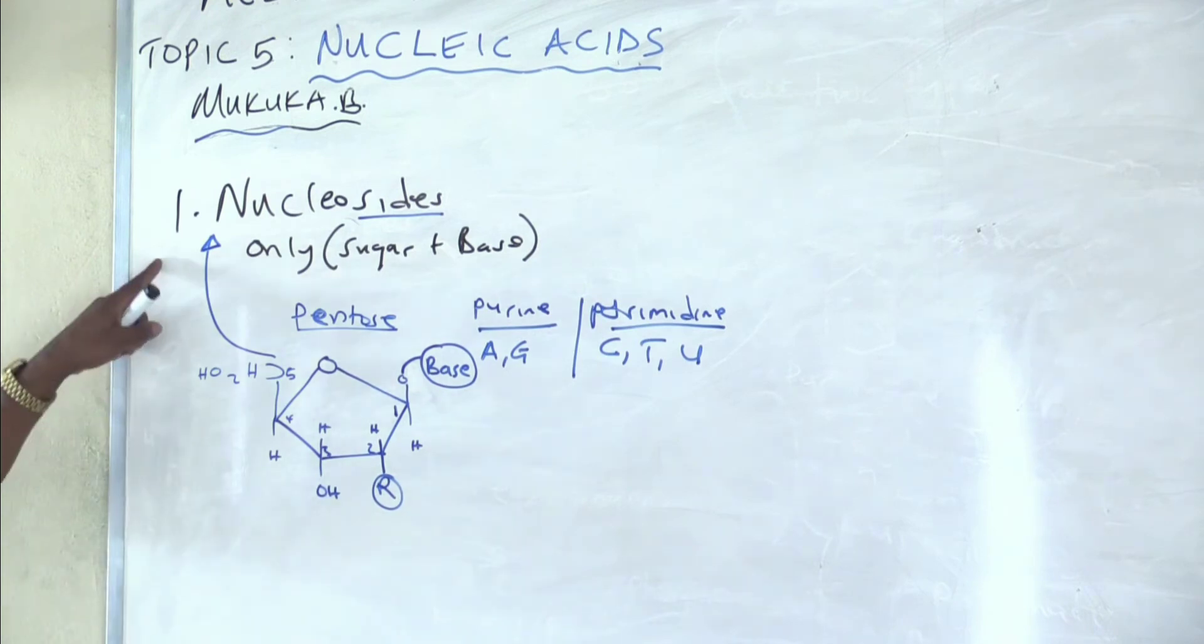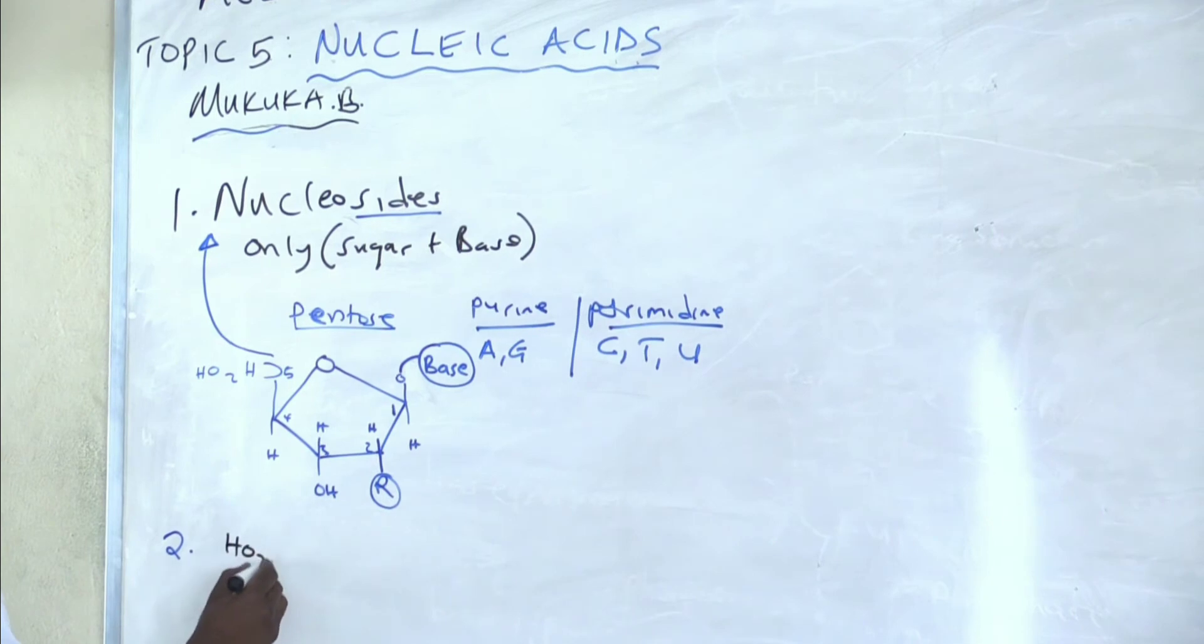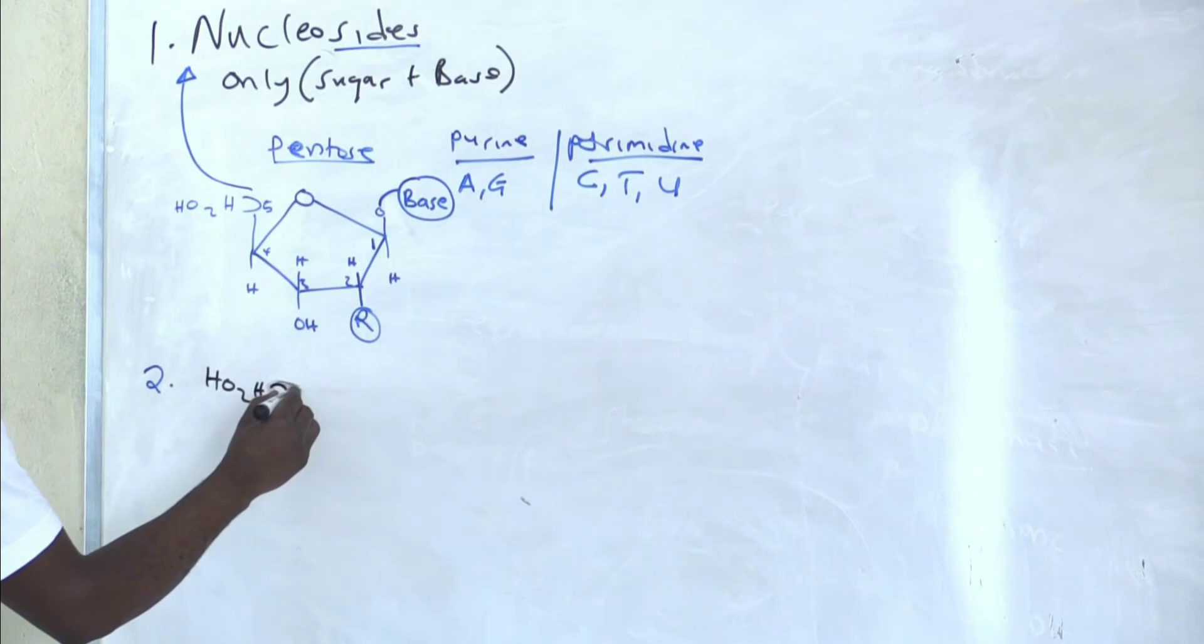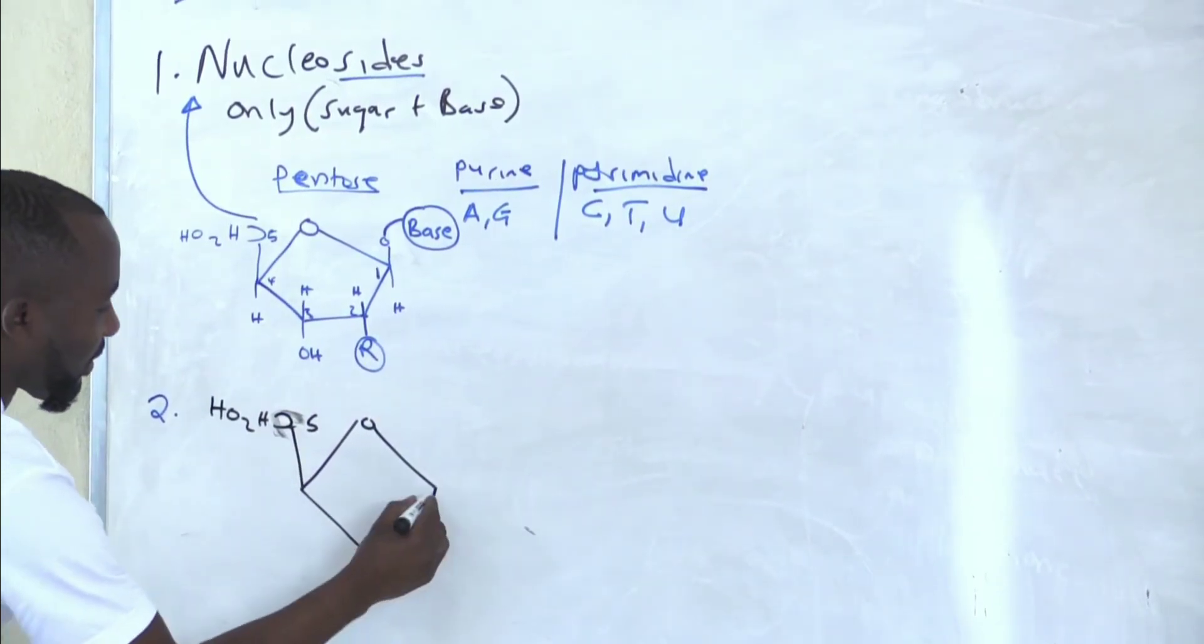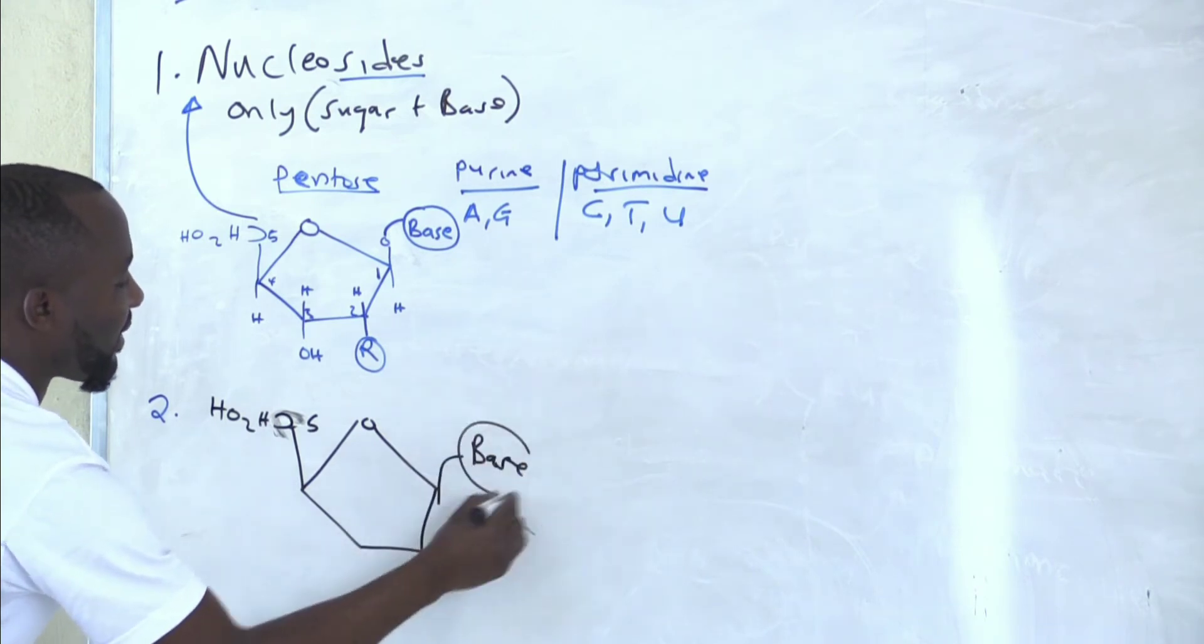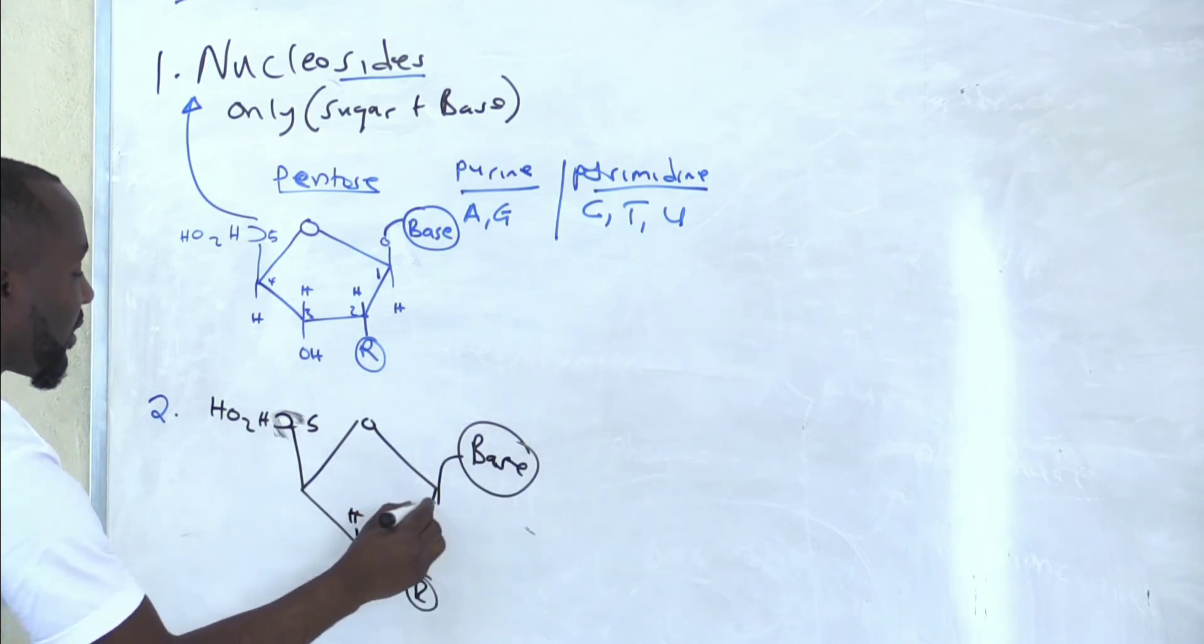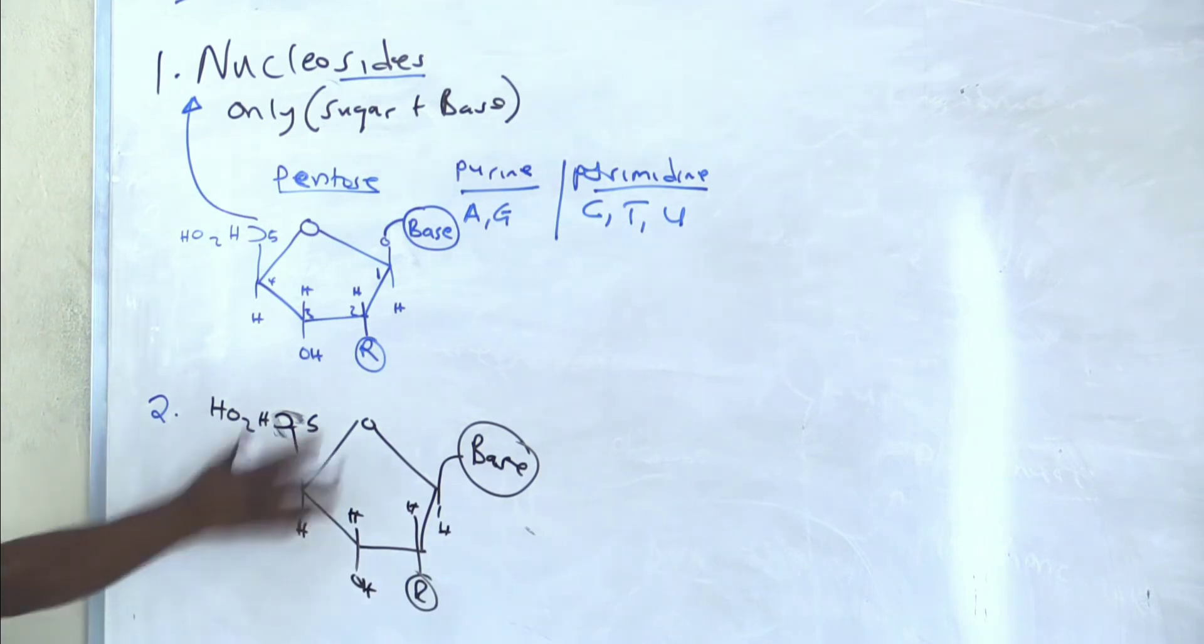How do you proceed from a nucleoside to a nucleotide? All you do is get the structure. What is this structure? We've already attached a base. This is R or H. When you get a nucleoside, if you want to transform this nucleoside into a nucleotide...